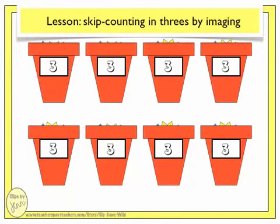The next skip counting sequence that I will ask you to image is for the pattern of 3. Here we have the flower pots again. I would like you to see a picture in your head about the groups of flowers that will grow out of each pot as we skip count each group of 3. Here we go.